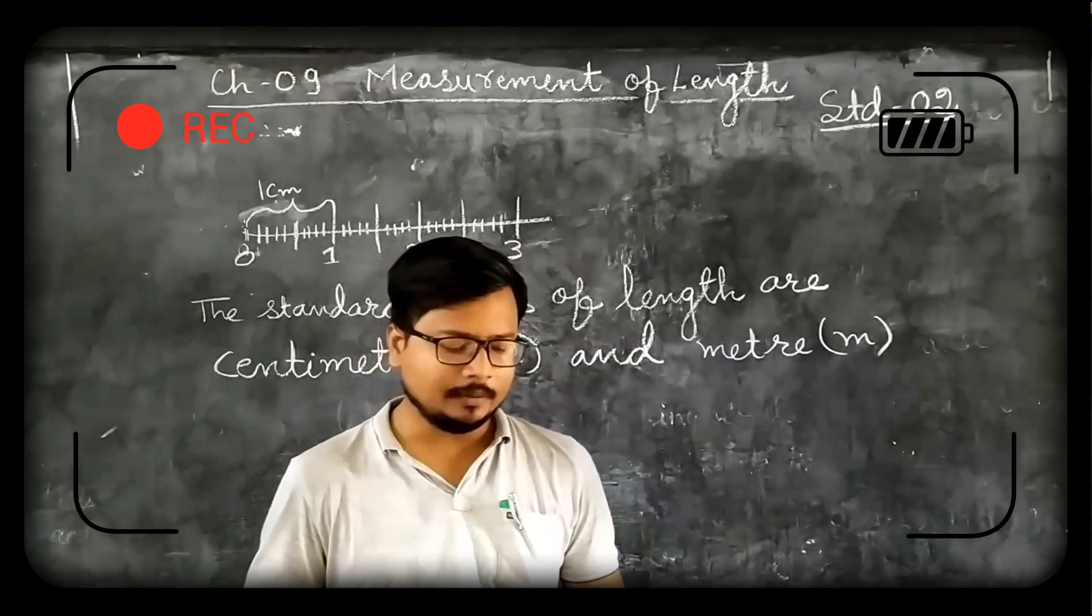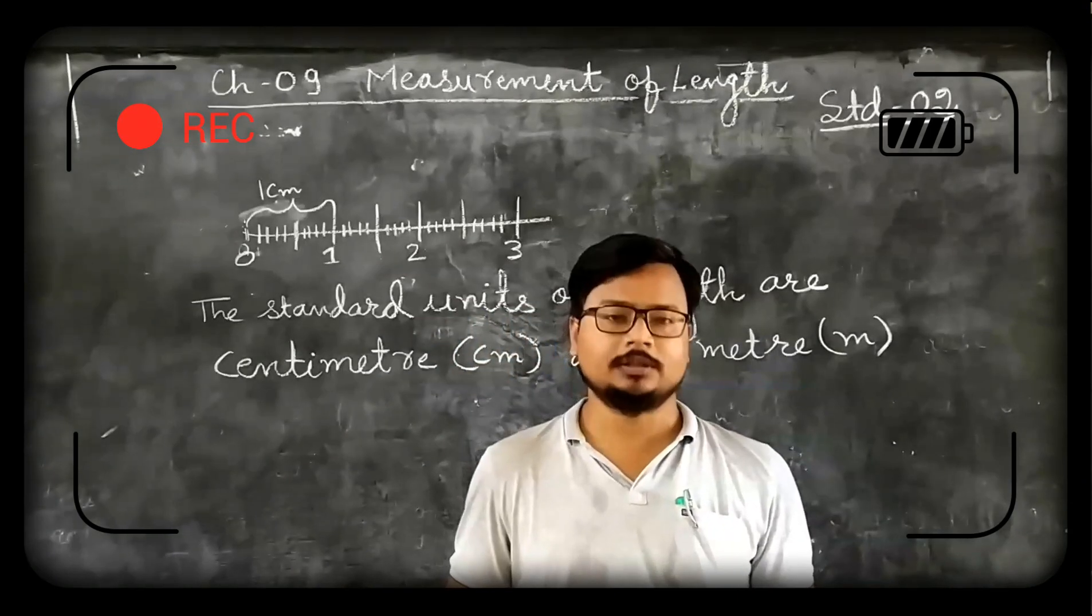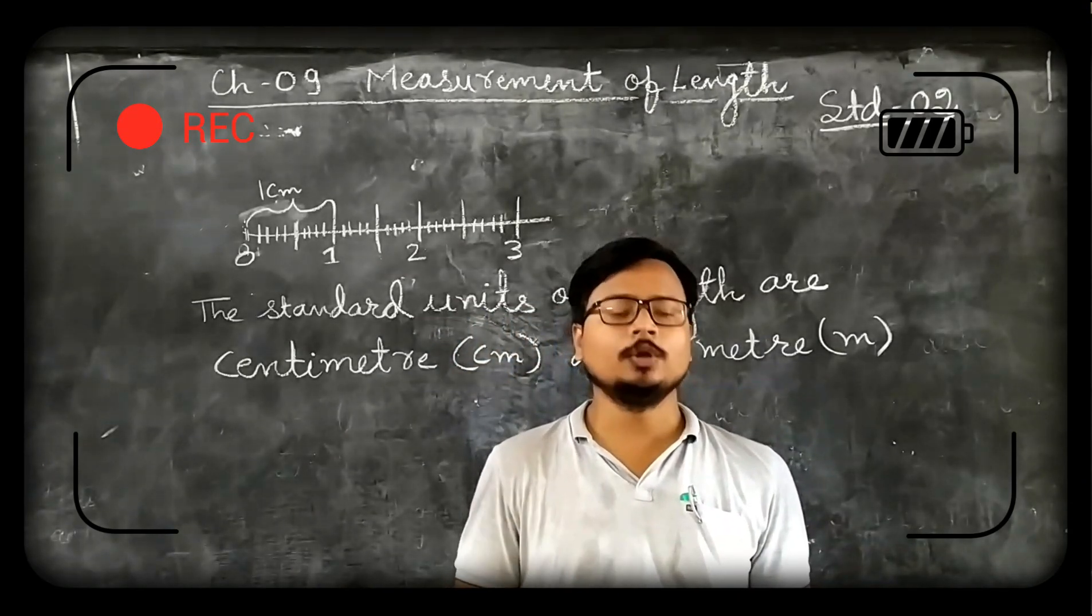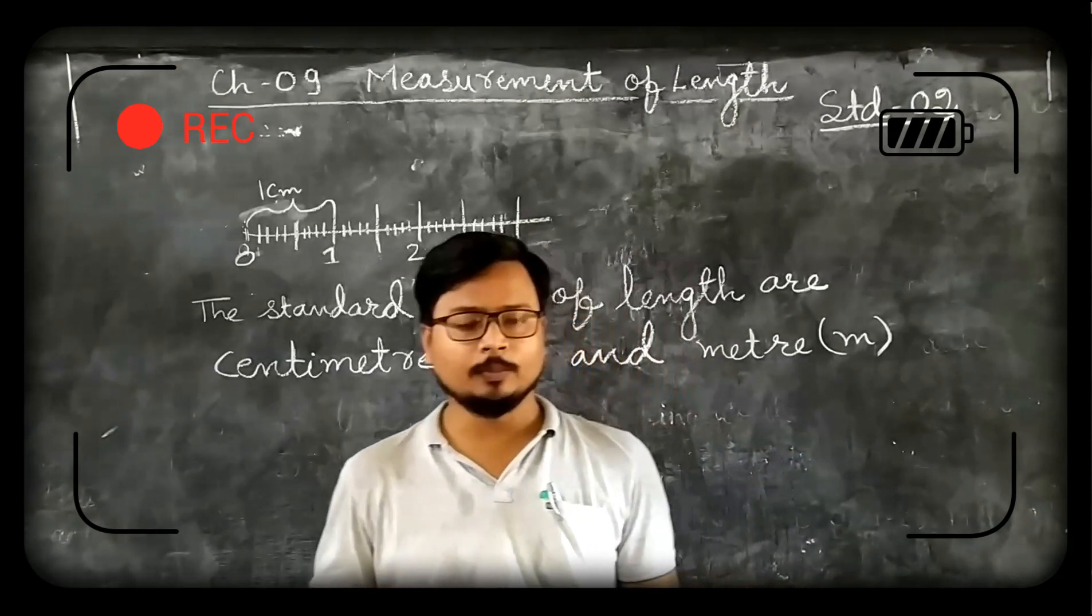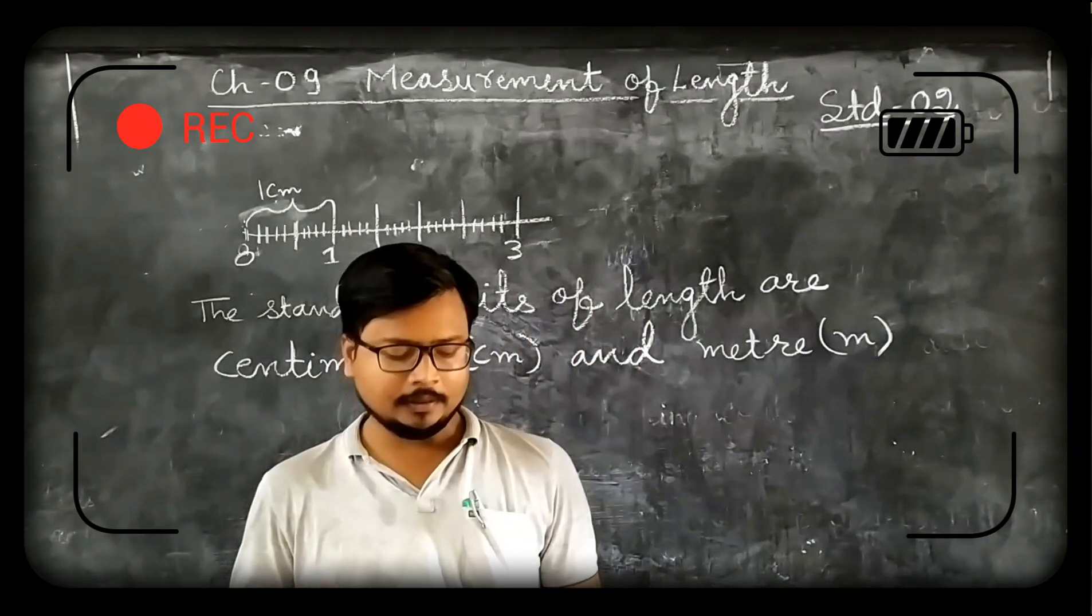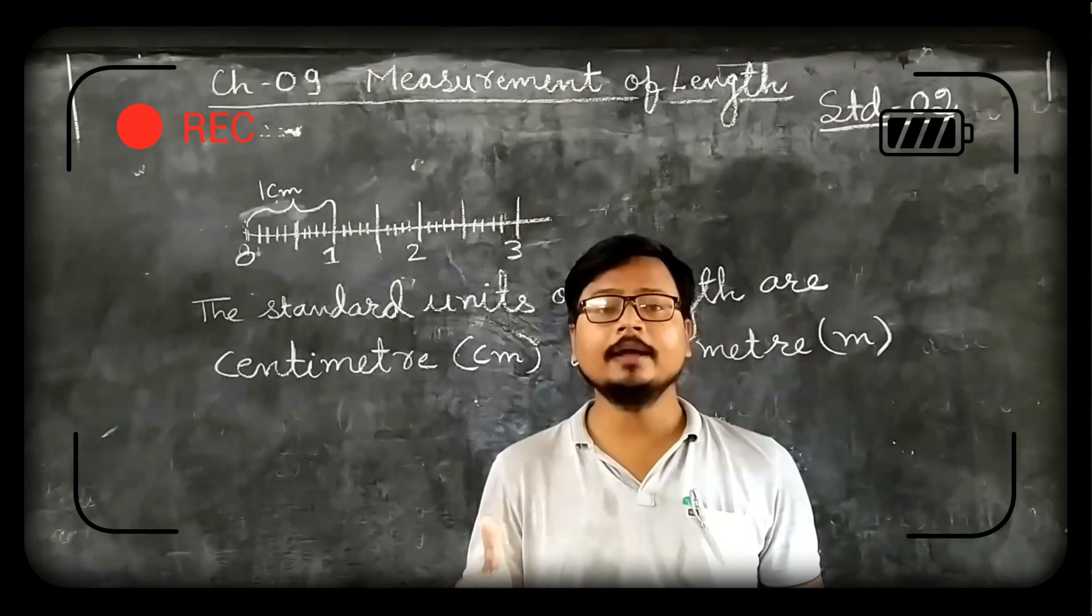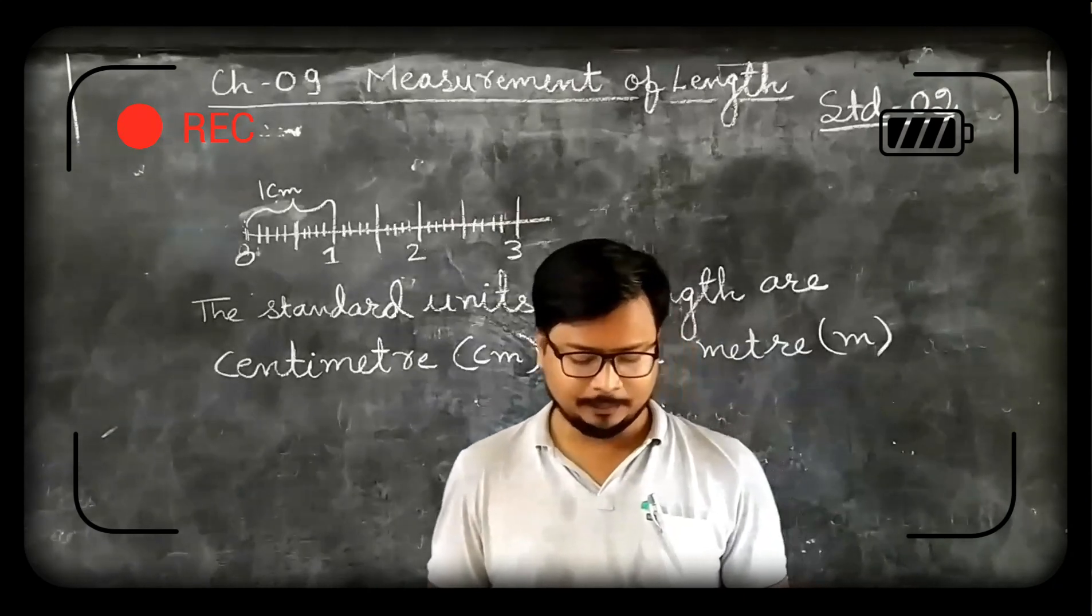Earlier days, in earlier times there were no measurement, so people used hand span, cubit, foot length, width, finger length and pace. Pace means step length.